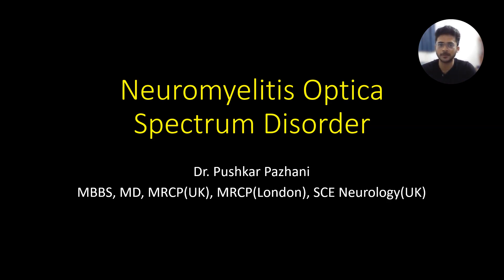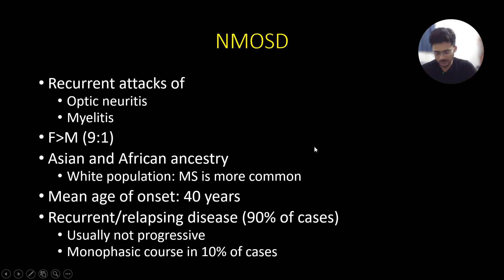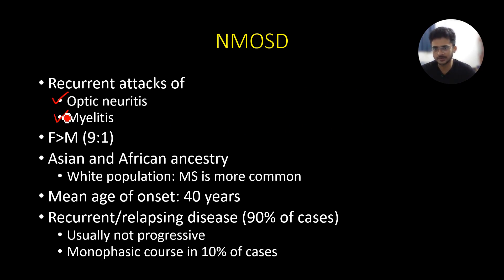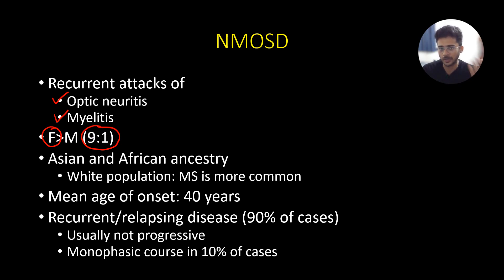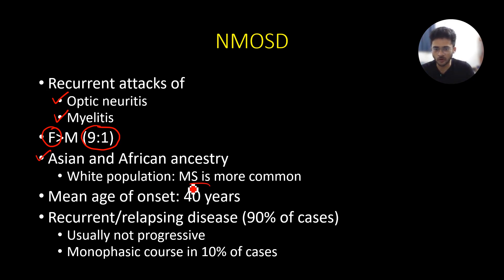Today let's discuss about neuromyelitis optica spectrum disorder. NMOSD is characterized by, as its name suggests, recurrent attacks of optic neuritis as well as myelitis. Like any other autoimmune disorder, it has a predilection to involve female patients with a sex ratio of 9:1 females to males. Multiple sclerosis more often affects the white population, whereas NMOSD is more likely to affect patients of Asian and African ancestry.